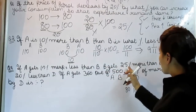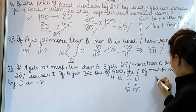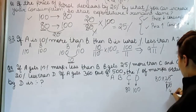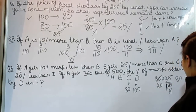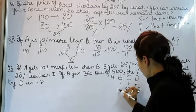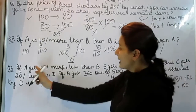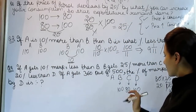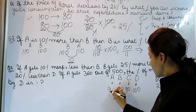Now B gets 25 percent more than C. What is 25 percent of 80? That is 20. Add 20 to 80, we get 100. So B's value is 100. Now A gets 10 percent marks less than B. 10 percent less of 100 is 90. So A's value is 90.